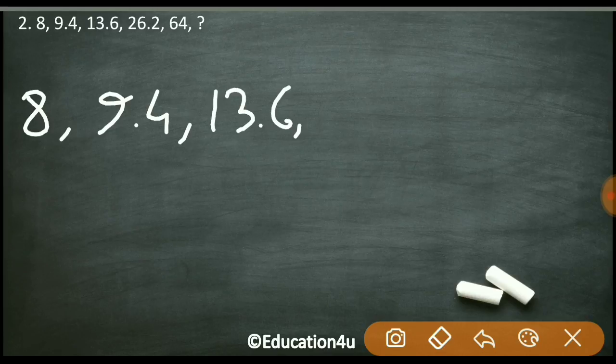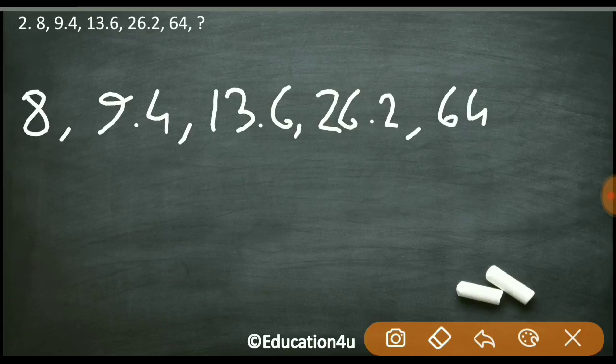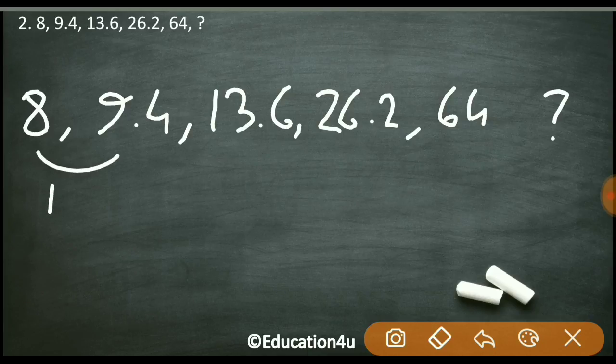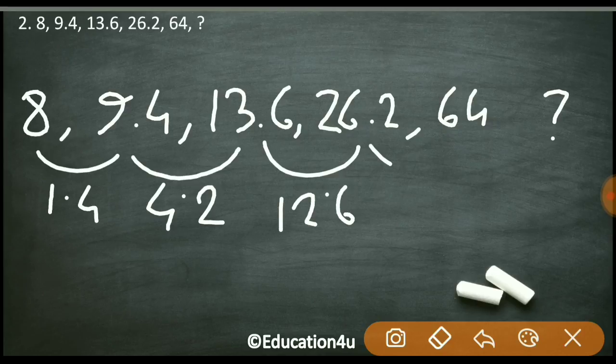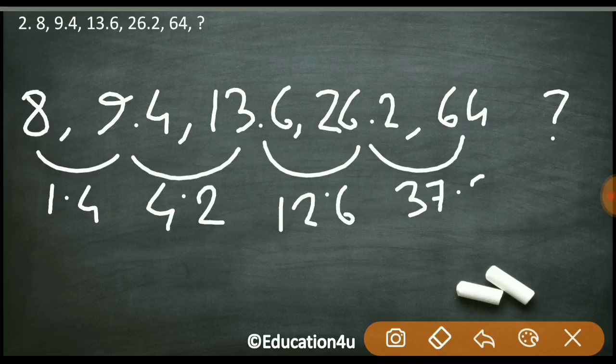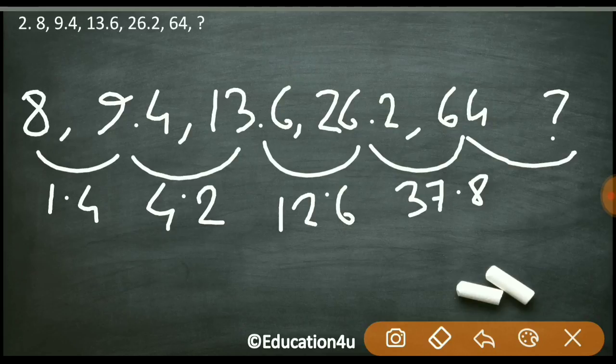Next question is the series: 8, 9.4, 13.6, 26.2, 64, and the next number is? Looking at the pattern, the differences are: 9.4 - 8 = 1.4, 13.6 - 9.4 = 4.2, 26.2 - 13.6 = 12.6, and 64 - 26.2 = 37.8.